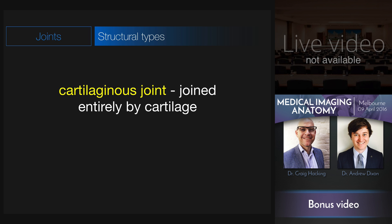The next type of joint is the cartilaginous joint, and these joints are joined entirely by cartilage. The word 'entirely' is important here because, as we'll see, synovial joints do contain some cartilage. Cartilaginous joints can be divided into primary and secondary.